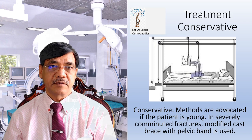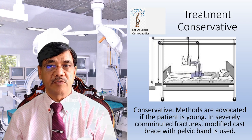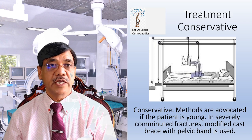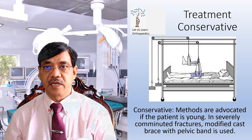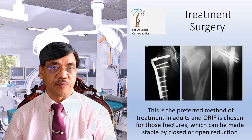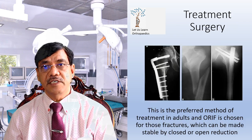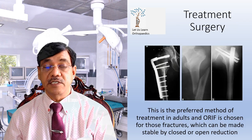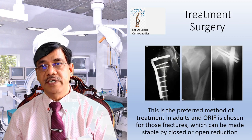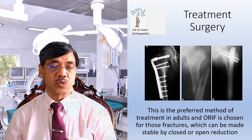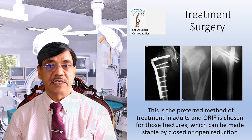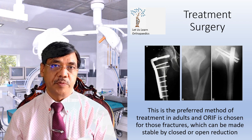Conservative treatment methods are advocated if the patient is young or in severely comminuted fractures; a modified cast brace with a pelvic band is used. Surgical treatment is the preferred method in adults, and open reduction internal fixation is chosen for fractures which can be made stable by closed or open reduction.